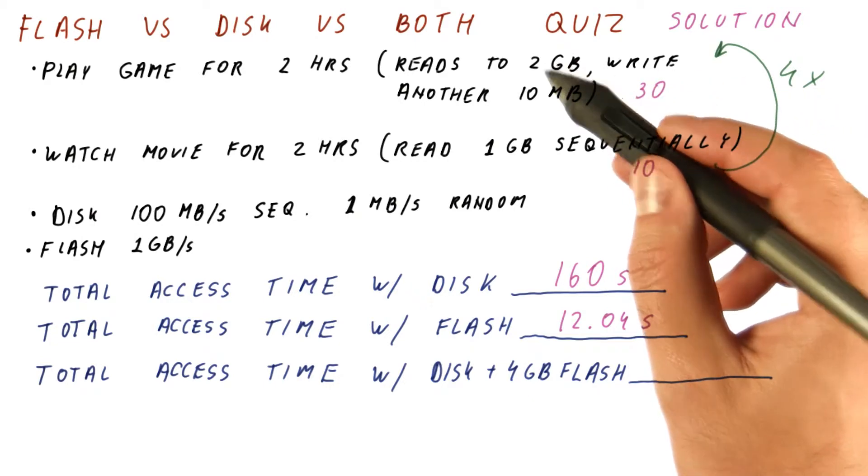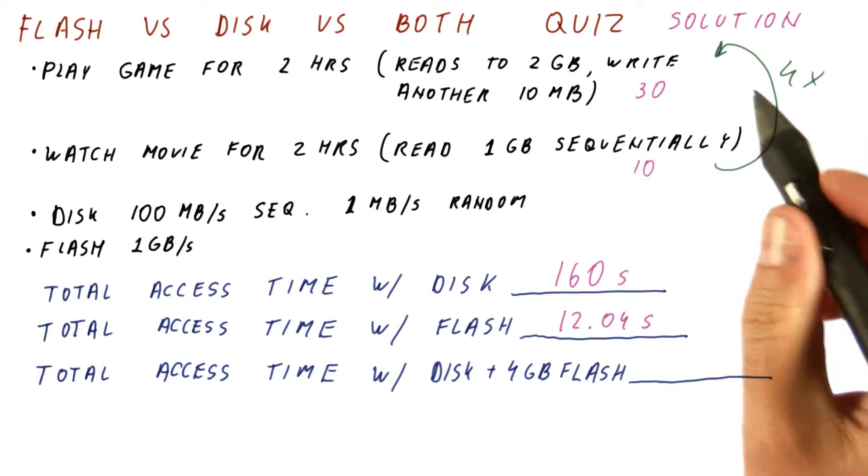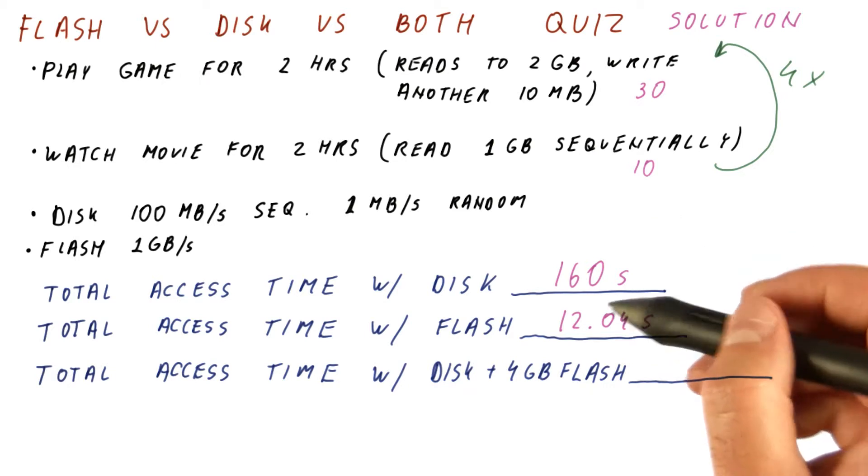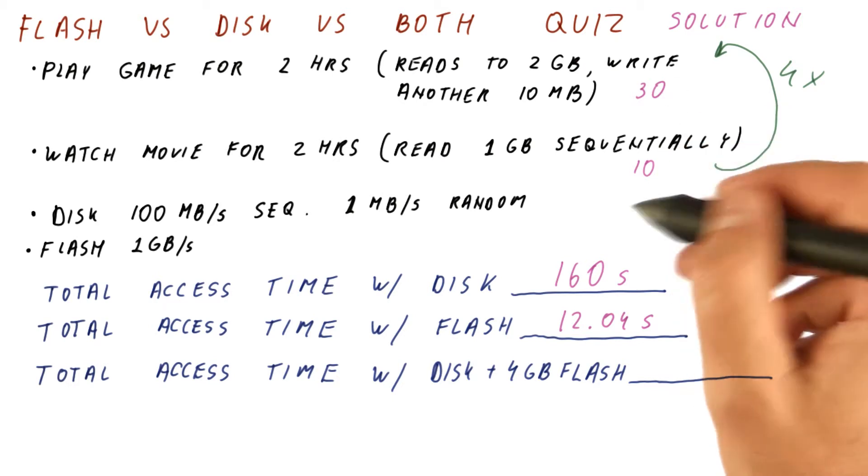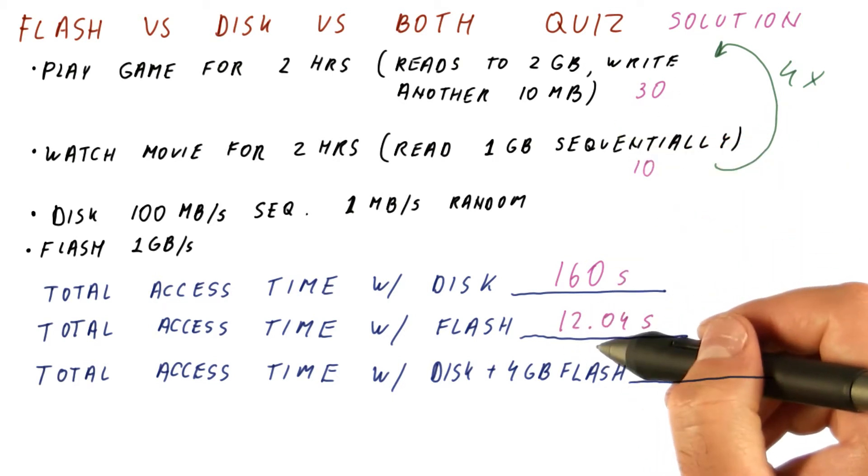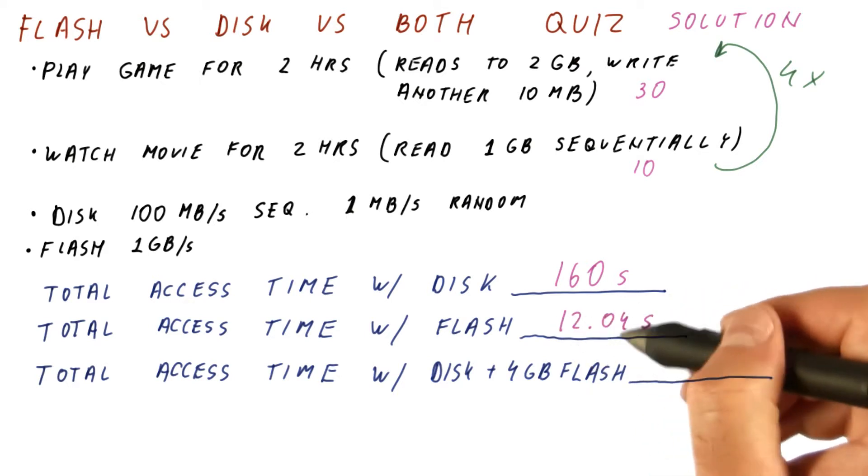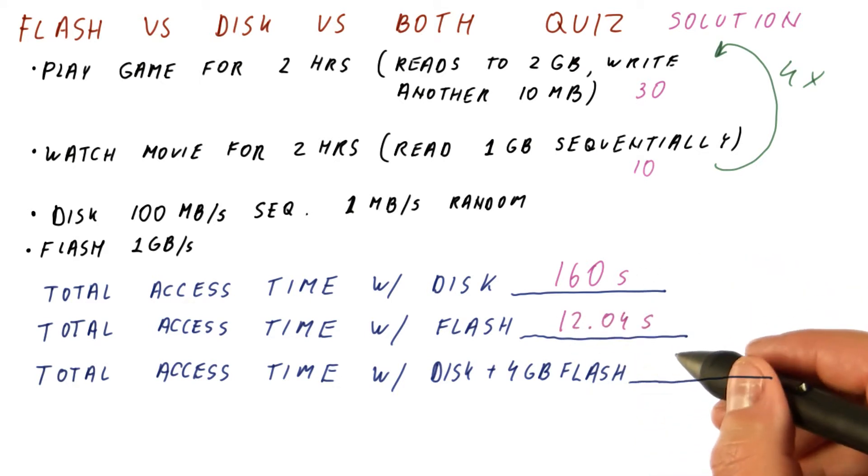And we spend 3.01 seconds copying this data to the flash. After that, we're having the flash access time. So all together, we have 40 seconds of disk access time, plus one quarter of this for copying to the flash, and three quarters of this for actually reading off the flash, the same as here, for a total of 52.04 seconds.